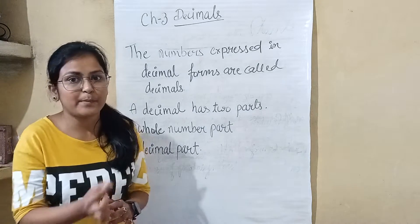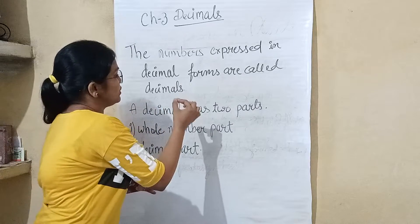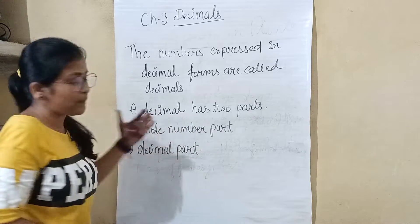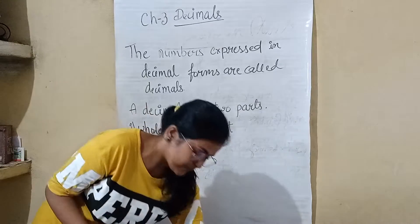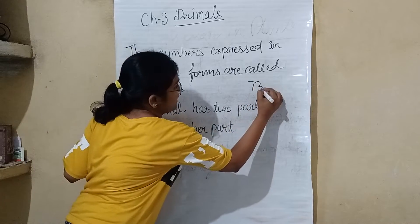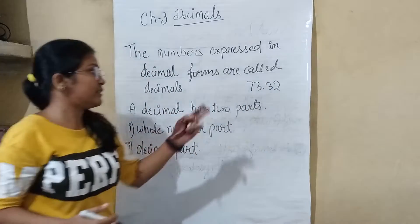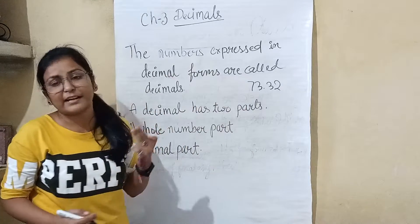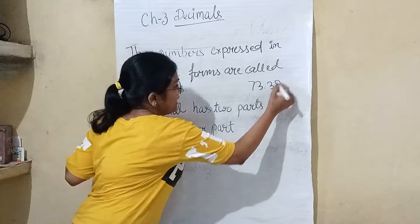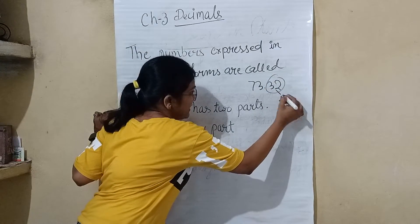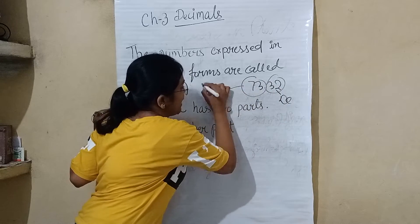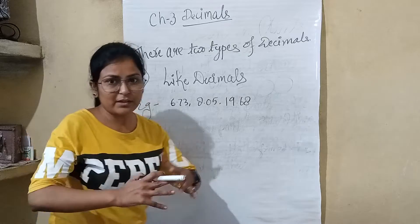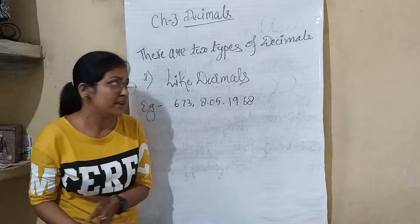In a decimal number, the first part is the whole number part and the second is the decimal part. For example, the number 73.32 — the point separates the two parts. The left side is the whole part and the right side is the decimal part.